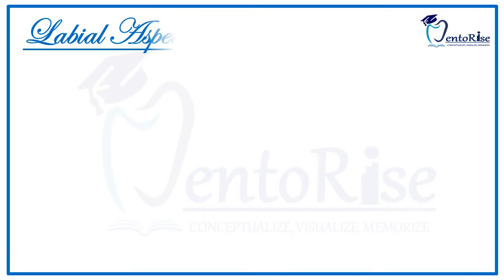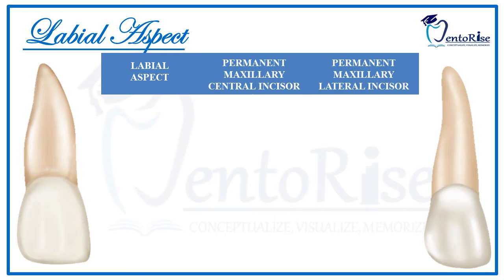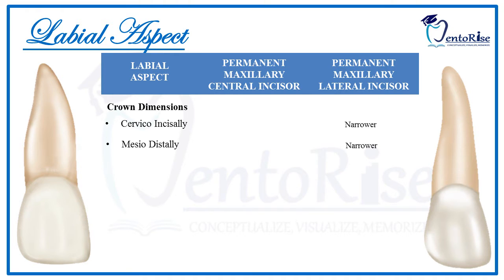Comparing the labial aspect of permanent maxillary central incisors and lateral incisors, starting with the crown dimensions — both cervico-incisally and mesiodistally — the dimensions of lateral incisors are narrower in comparison to that of the central incisor. The surface of both the central and lateral incisor is smooth and convex; however, the convexity is more marked in the lateral incisor as compared to that of the central incisor.